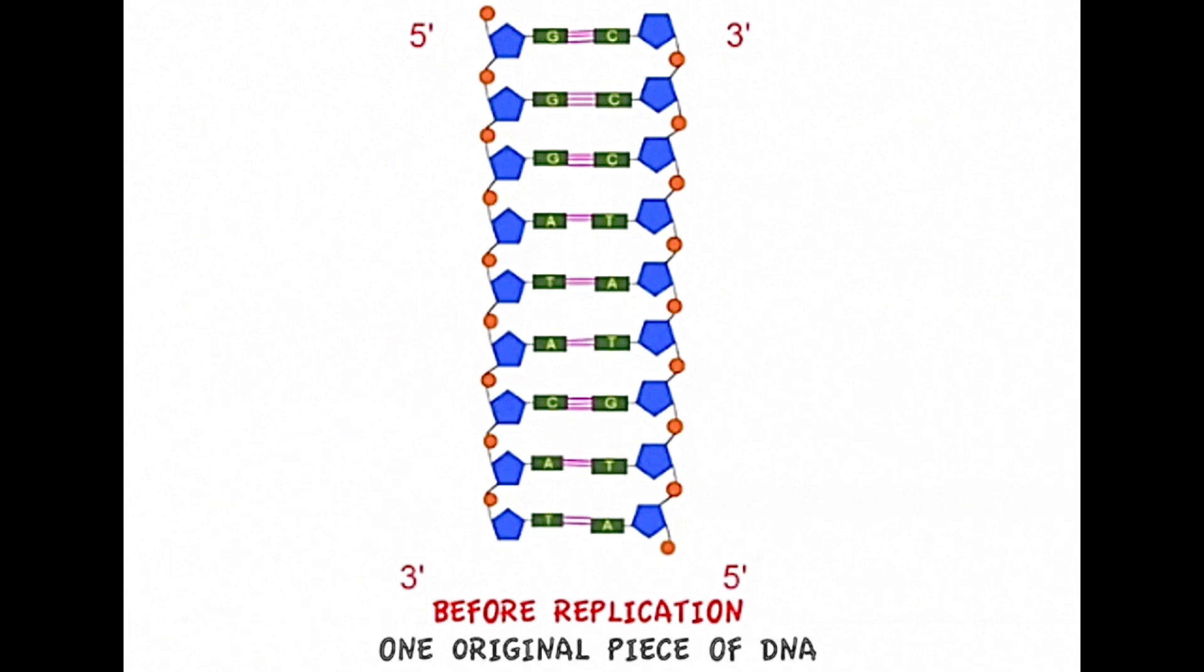Each of these strands undergoes DNA replication in a slightly different fashion so I'll deal with each one of them individually and then at the end I'll show you how it takes place together. So we'll first deal with what we call the leading strand.